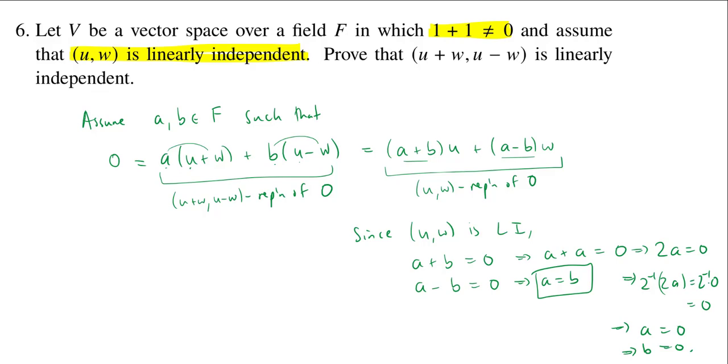We've just shown that the original coefficients in our (u plus w, u minus w) representation of 0 are actually the 0 coefficients. Therefore, 0 has a unique (u plus w, u minus w) representation. And therefore, (u plus w, u minus w) is linearly independent. All right, everybody. We'll see you next time with our video solutions to quiz 3.